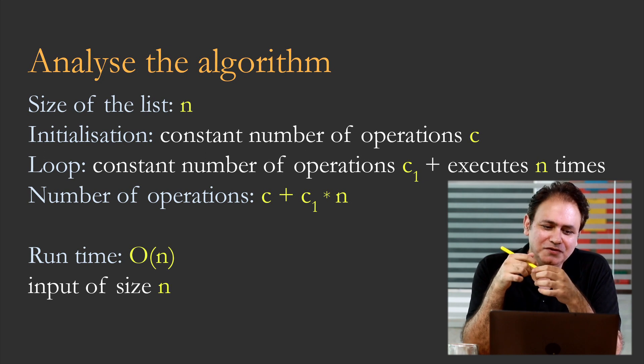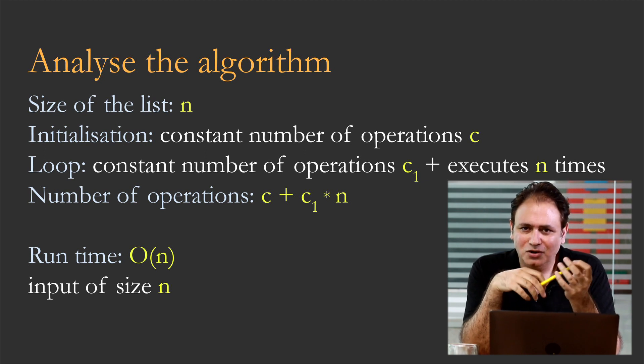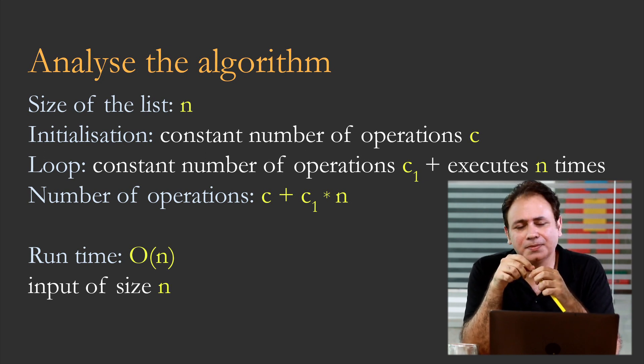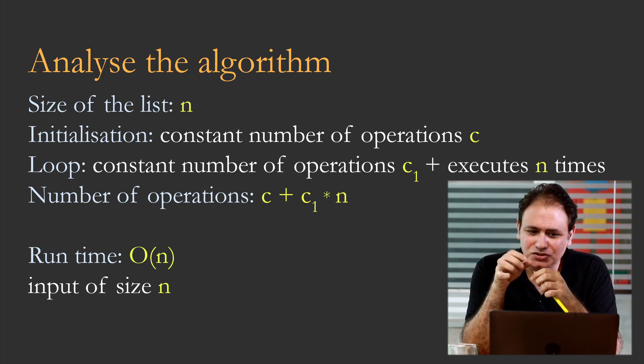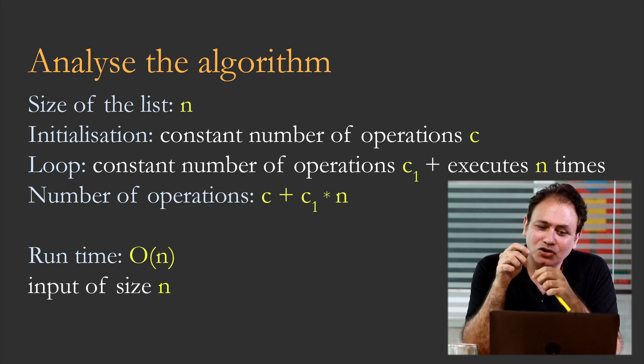So now let's go ahead and try and analyze the algorithm. We had a real problem, we coded up a solution, and now let's try and analyze the algorithm. So we've got a size of the list is n. The initialization takes a constant number of operations, c.